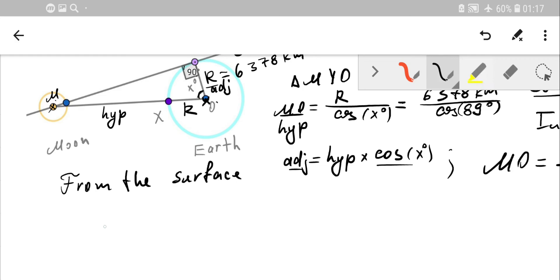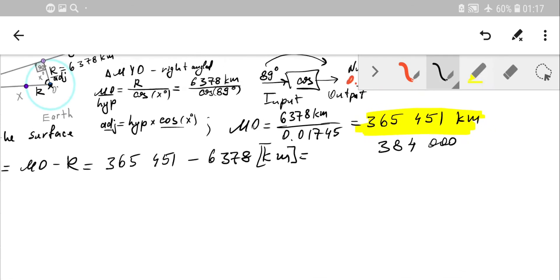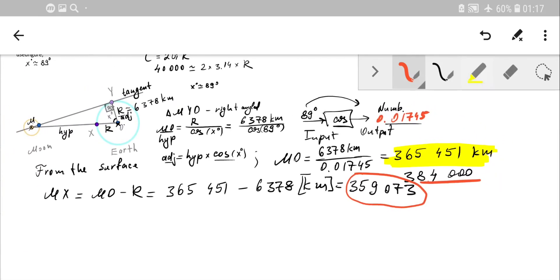This is MX, which equals MO minus the radius. Plugging in the data: 365,451 minus 6378 kilometers. Let's subtract—we get around 359,073 kilometers. This is even less than 384,000.